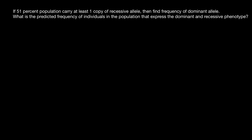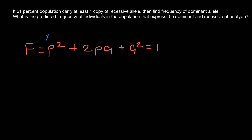In order to solve this problem, all you need to know is the Hardy-Weinberg formula, where the frequency of the three genotypes that can be made with two alleles equals P squared plus 2PQ plus Q squared, and all this equals one. For the genotype P squared, this is going to be genotype AA, or homozygous dominant.